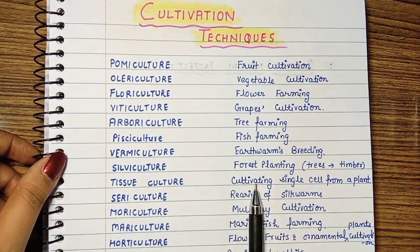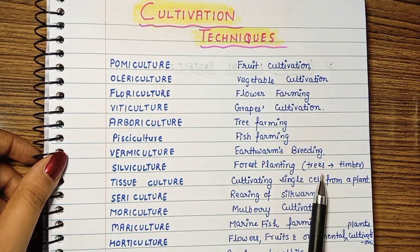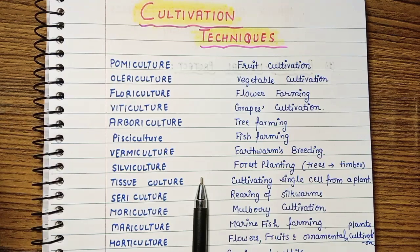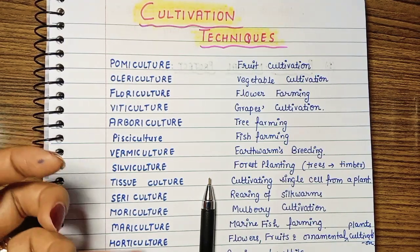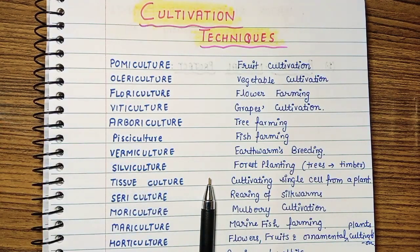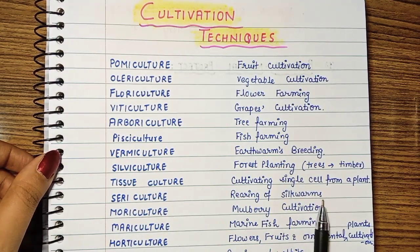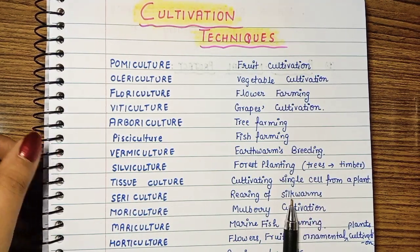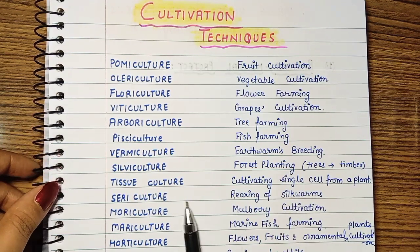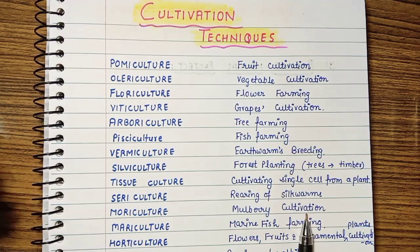Tissue Culture is cultivating single cells from a plant. If you take a single cell from a plant, you can grow it further — that is called Tissue Culture. Then, Sericulture — Sericulture is rearing of silkworms. Morriculture is Mulberry cultivation — Mulberry is a fruit.